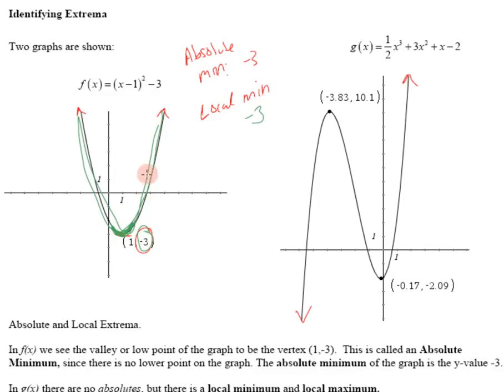Versus over here, look at this one, this hill. There is a local maximum right there at the top of the hill. Local because just around this area it is the highest portion. So we say local max. And that local max is 10.1. Now over here there's a local minimum right around that area. And it's negative 2.09. So local minimum is negative 2.09.